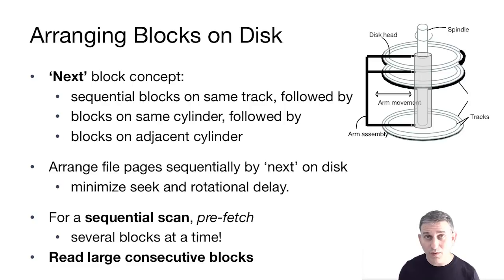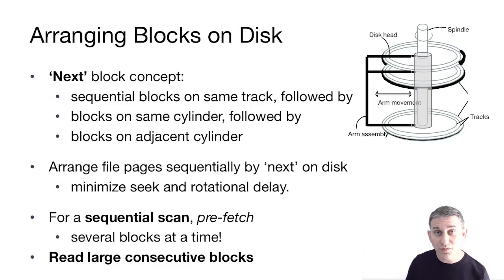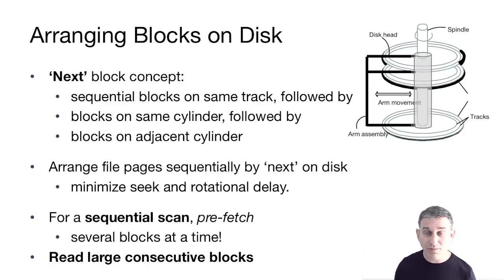Moreover, when we do sequential scans, we try to pre-fetch several blocks at a time. As a track spins under the head, even though we may have only asked for one block, we'll transfer a whole track's worth of blocks, or maybe even a whole cylinder's worth. So we read large, consecutive chunks of blocks whenever we get a request.